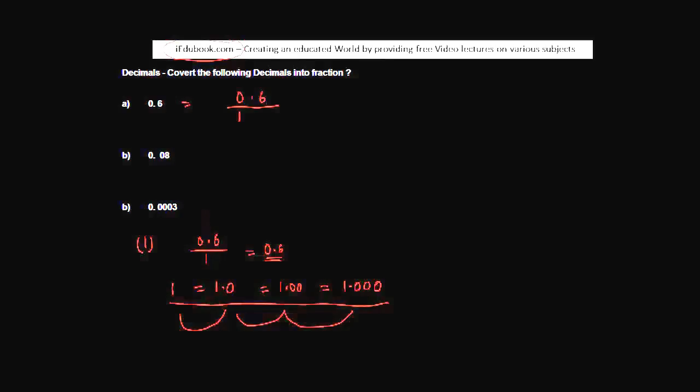Once you've done that, then basically put in a decimal point after 1, and try to put in as many zeros as are the number of digits after the numerator. So let's say in this case, after the decimal place, we have one digit, so we put in one zero.